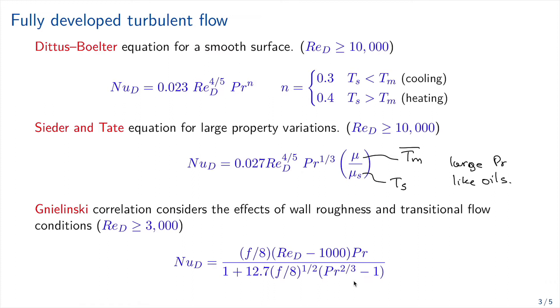Finally, we have the Gnielinski correlations that consider the effects of wall roughness and transitional flow conditions and is good for Reynolds bigger than 3,000 and is going to be given in terms of the friction factor, Reynolds and Prandtl.